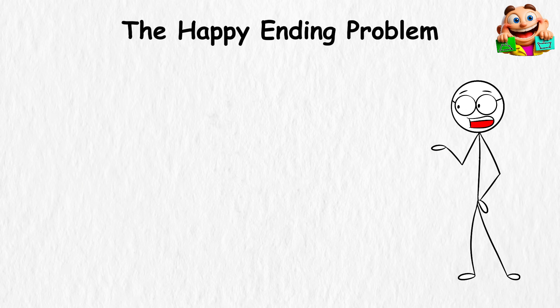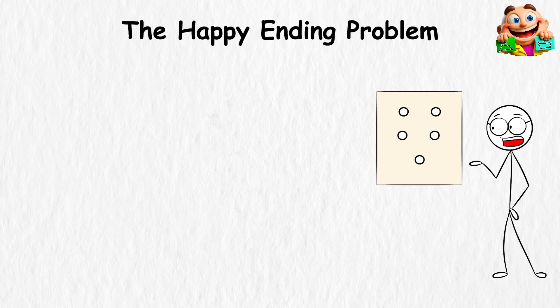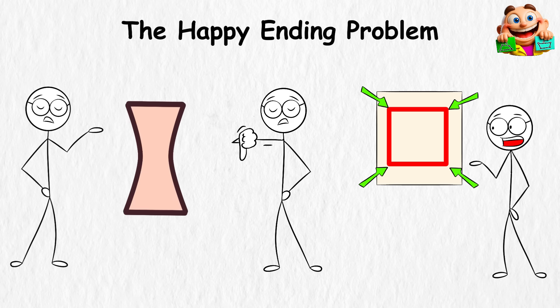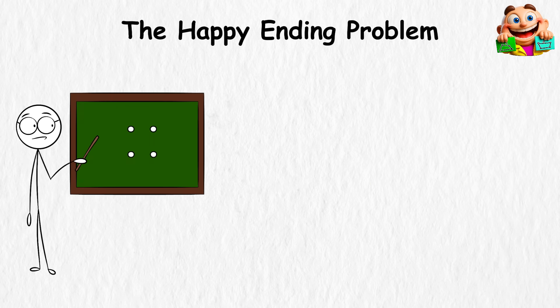In plain English, that just means, no matter how you scatter five dots on a page, you can always connect four of them into a four-sided shape where all the corners stick out, like a normal box or kite, not a shape that bends inward. Turns out, yes, no matter how scattered the points are, four of them will always connect into a shape that doesn't cave in.